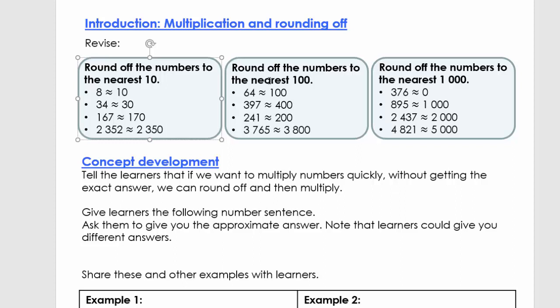Welcome back. Now we're going to round off numbers to the nearest 100. We look at the 100s and the 10s place. For 64, we ask: between which two 100s is 64? It's between 0 and 100. We look at the 10s place — the 6 — and since it's more than 5, we round it to 100. So 64 rounded off to the nearest 100 is 100.